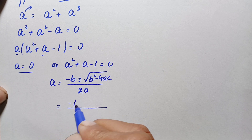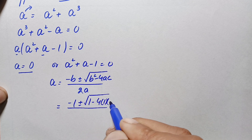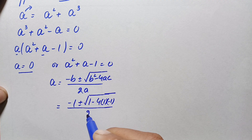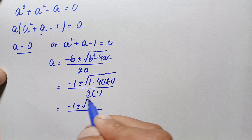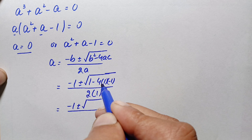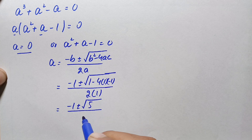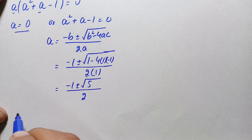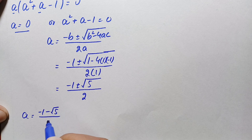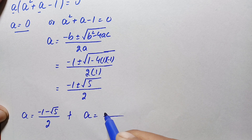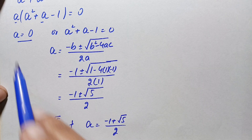Substituting into the quadratic formula: a = (−1 ± √(1 − 4(1)(−1))) / 2 = (−1 ± √(1 + 4)) / 2 = (−1 ± √5) / 2. This gives two values: a = (−1 − √5) / 2, which is negative, and a = (−1 + √5) / 2, which is positive. So we have three values of a: zero, one negative, and one positive.